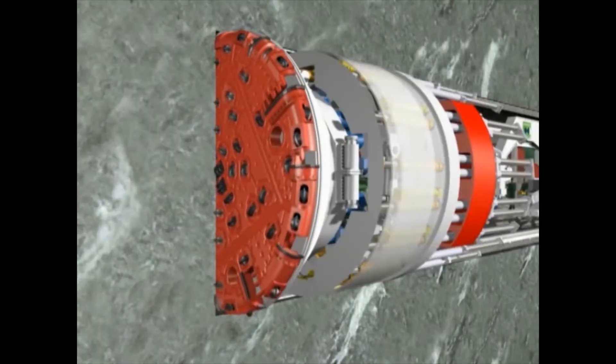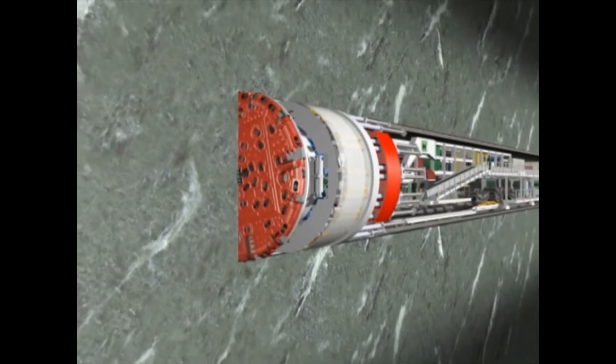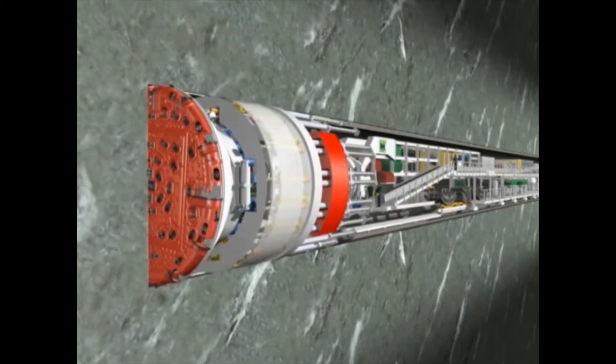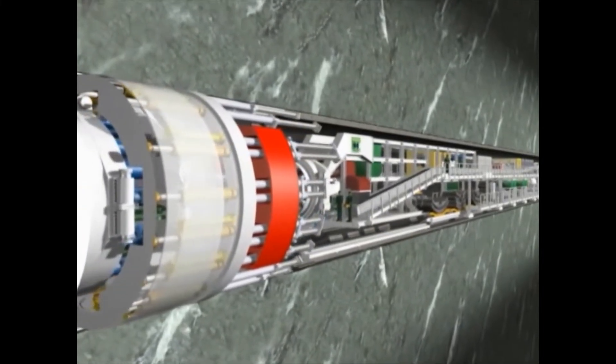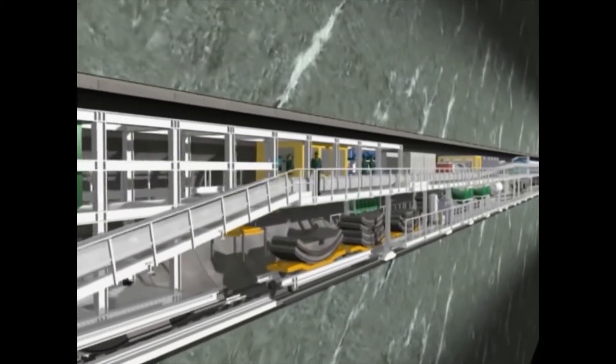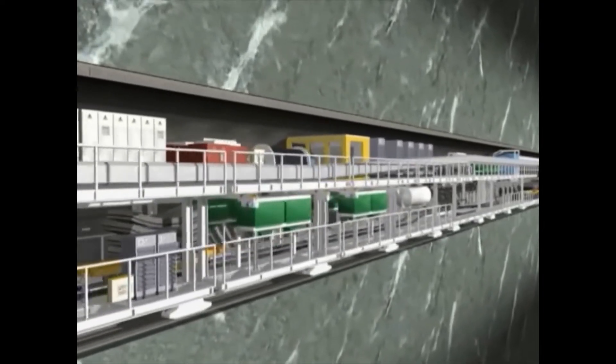The double-shield machine is a mobile tunnel factory. The backup system located behind the shield keeps the factory running. The control cabin of the tunnel-boring machine is installed here.